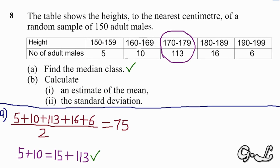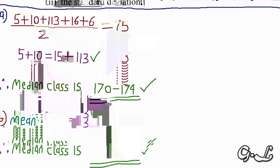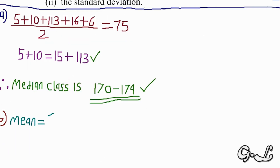Let's now go to Part B, which reads: calculate an estimate of the mean. To find the mean of grouped data, we use the formula: mean equals summation of f times x over summation of f.